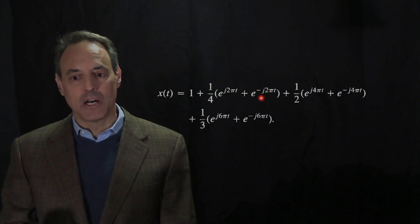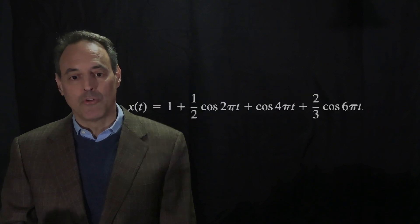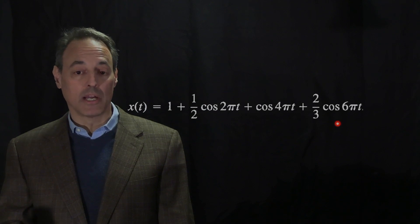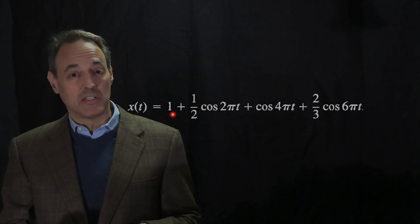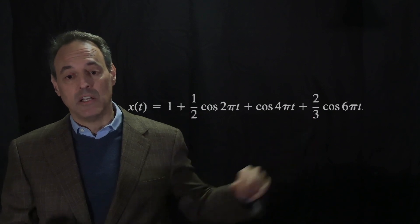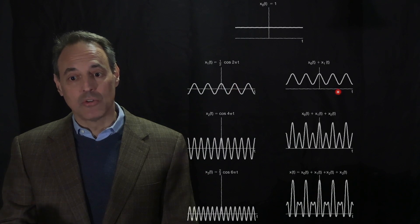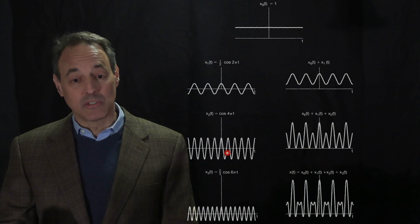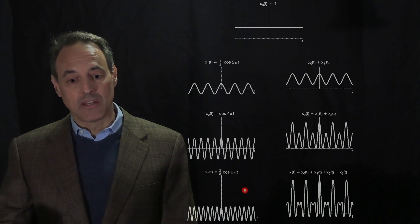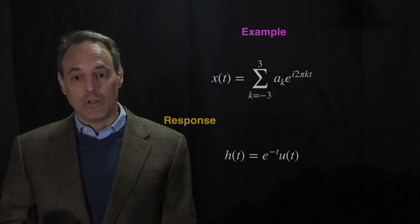If you write it out in real terms, here's what this signal looks like: it's composed of four pieces — the DC component of 1, an oscillation at 2πt, an oscillation at 4πt, and an oscillation at 6πt. Another way to think about it: your first signal is 1. You add a cos(2πt) component — the DC component lifts this cosine off the axis. Then you add cos(4πt), a faster oscillation. Then you add cos(6πt), and this is your composite signal — the linear superposition of those four signals.